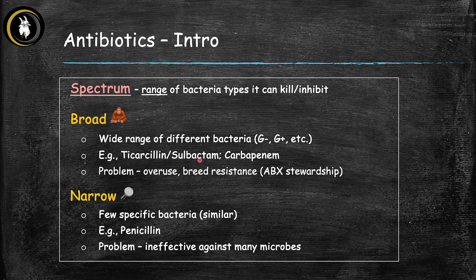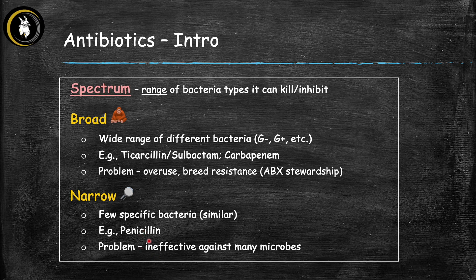A couple of examples are listed, which you'll see as we go through the drug classes. The problem with broad spectrum antibiotics is that they tend to get overused, which can potentially breed resistance against them, so we have to be careful not to use them unless they're really indicated. Narrow spectrum antibiotics target only a few specific bacteria that are very similar to each other. A good example is penicillin, the original antibiotic discovered, which is only helpful for one or two bacteria if we know that's the cause of the infection.